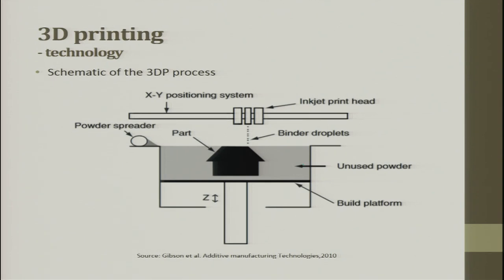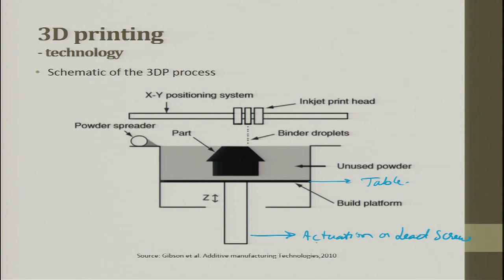This is how a typical schematic diagram looks. You have a powder spreader that spreads on top of the table. The table will have a tank. There is a lead screw which moves back and forth, up and down. When powder is spread on top of it, one layer thickness is maintained. Then we use the inkjet printing head, which is attached to a frame that can move in the X and Y directions. The inkjet head drops the binder on top of the powder, and the powder gets agglomerated.